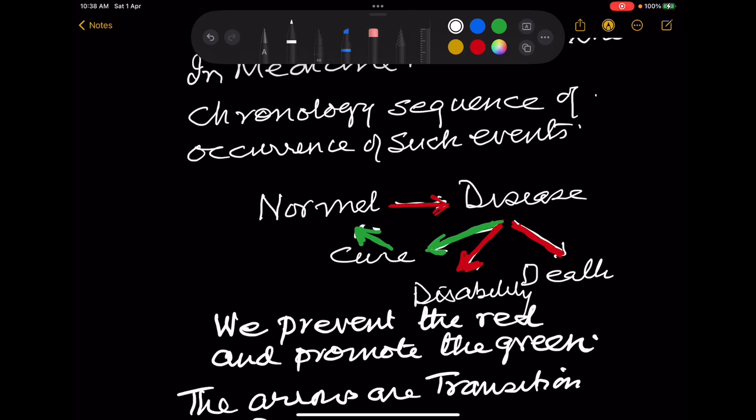See this, this is called a biological model. In the population, normal are getting converted to disease. The disease may die, get disabled, or get cured and become normal again. So this is occurring continuously in the population.